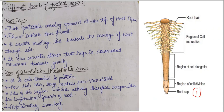One more thing to remember is that the root cap secretes certain substances, and it guides the root towards gravity — towards the soil.